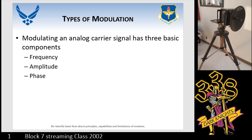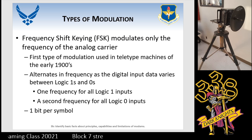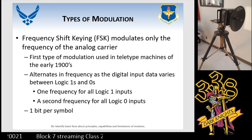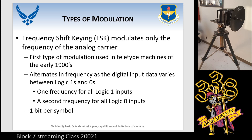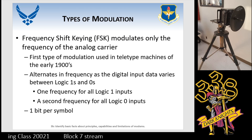Getting into types of modulation — modulating an analog carrier signal has three basic components: frequency, amplitude, and phase. In frequency shift keying (FSK), you modulate only the frequency of the analog carrier by alternating in frequency as the digital input data varies between logic ones and zeros. This type of modulation uses one bit per symbol.